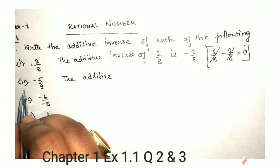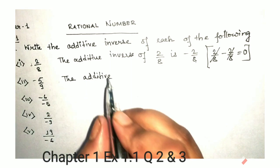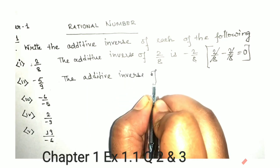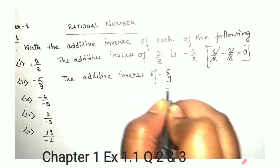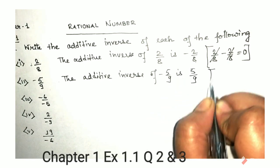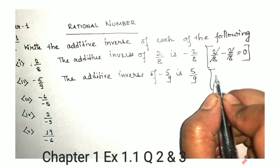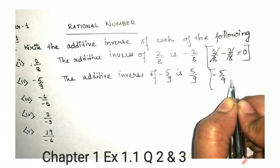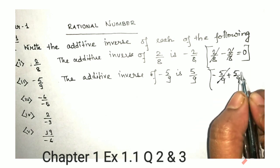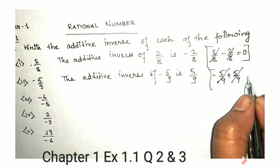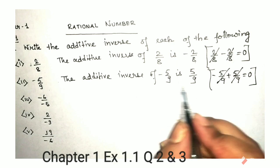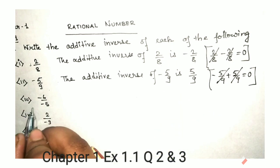Now in the next one we have minus 5 by 9. So the additive inverse of minus 5 by 9 is 5 by 9. See, this was the number minus 5 by 9 and the additive inverse is 5 by 9 — opposite sign but the same number, so we can cancel it and we are getting 0. That means this is the additive inverse of this.